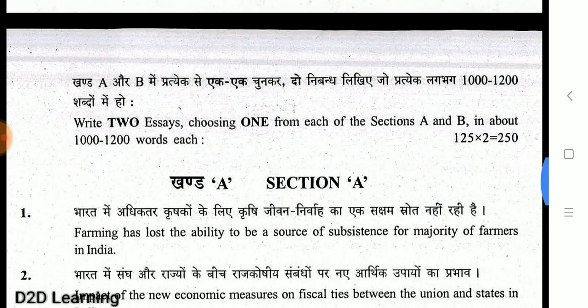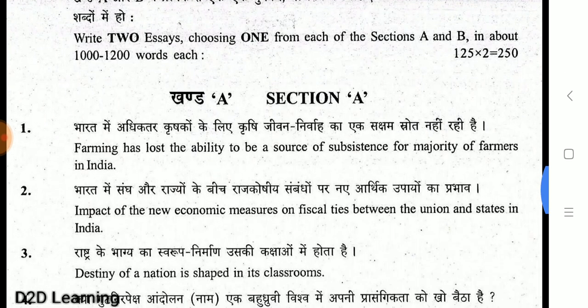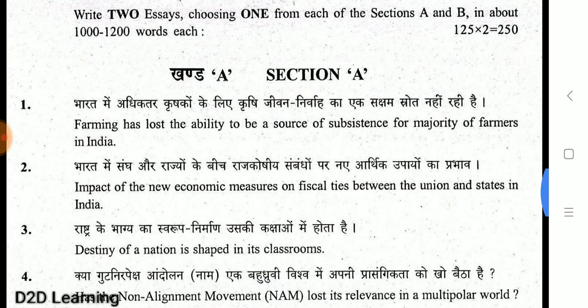Now, we will look at the question paper. What are you going to do? Write 2 essays — choose 1 from each section: from Section A and from Section B. One essay is worth 125 marks, the other 250 marks.